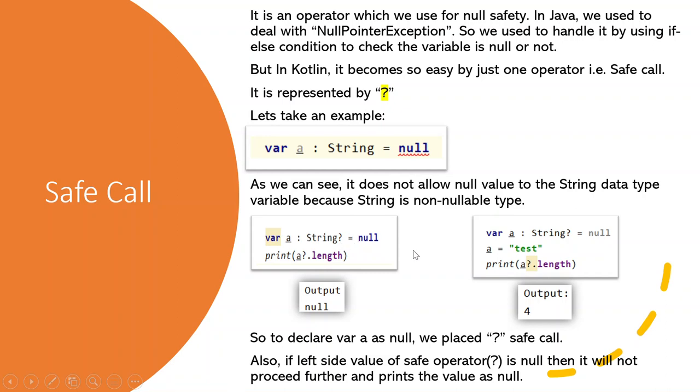Now in the second statement, it will only execute the length method if a is not null, otherwise prints the value as null. As in example 2, where a is equal to null, and then we are declaring a is equal to test.